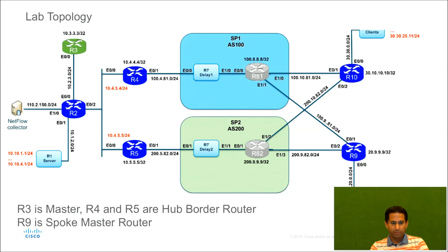We will be using this setup in our lab to simulate the smart probes being sent from the hub router and received on the spoke master controller router. R3 is going to act as the master controller router on the hub side. R4 and R5 are hub border routers. R9 is our spoke master router as well as the spoke border router.